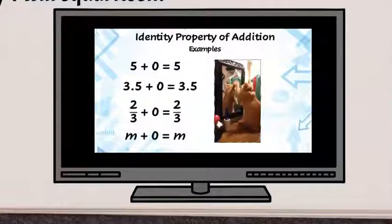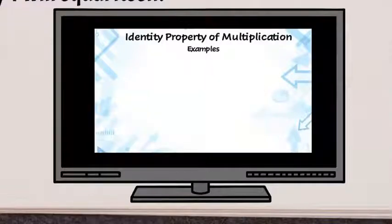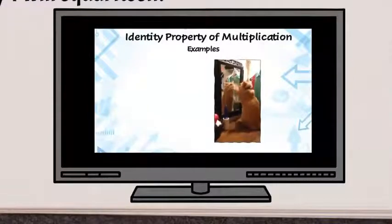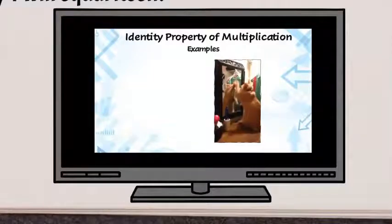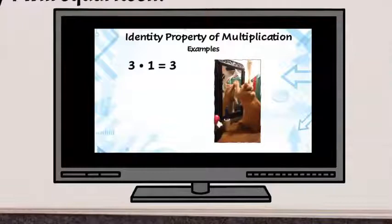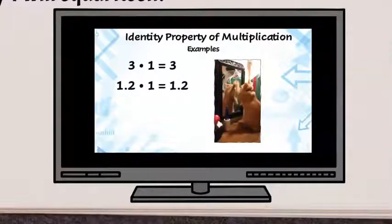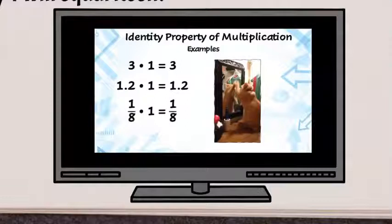Now, think about multiplication. And think about if the kitty is a number and wants to multiply by something to get an answer of itself, what can you multiply a number by in order to get the same number back? 1. So examples include 3 times 1 equals 3. 1.2 times 1 equals 1.2. 1 eighth times 1 equals 1 eighth. And p times 1 equals p.